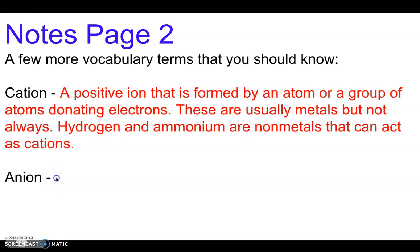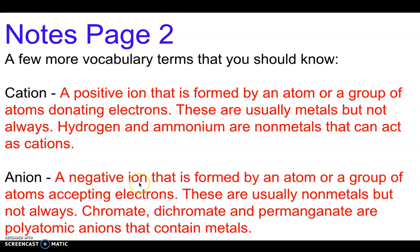Similarly, an anion is a negative ion that is formed by an atom or groups of atoms by accepting electrons. The difference between anions and cations is anions are negative, cations are positive. Cations are formed by donating electrons, anions are formed by accepting electrons.